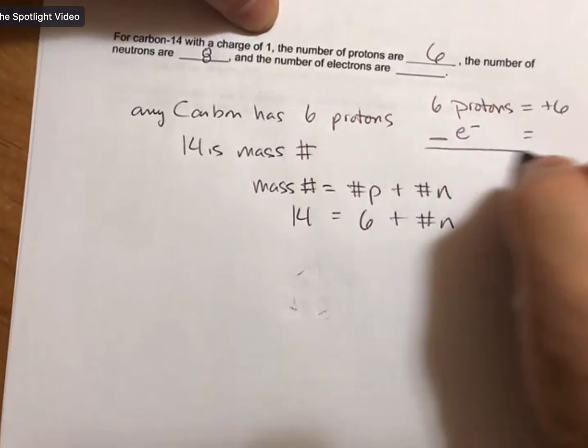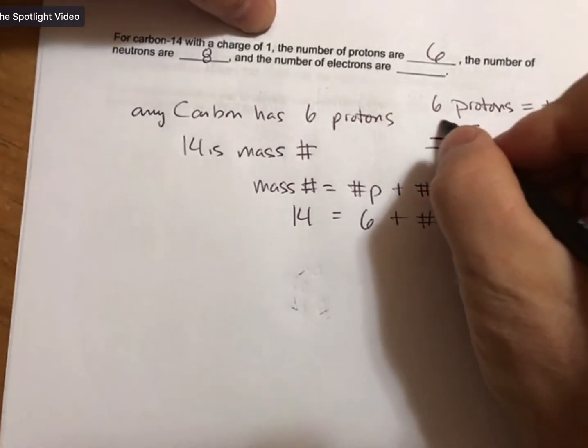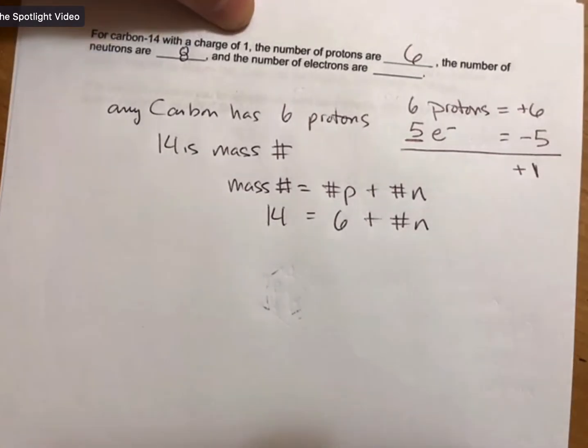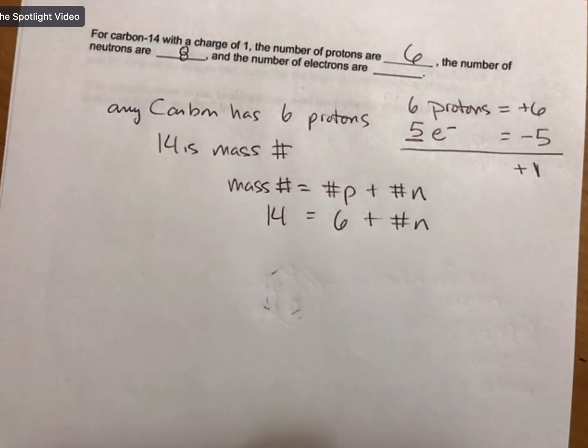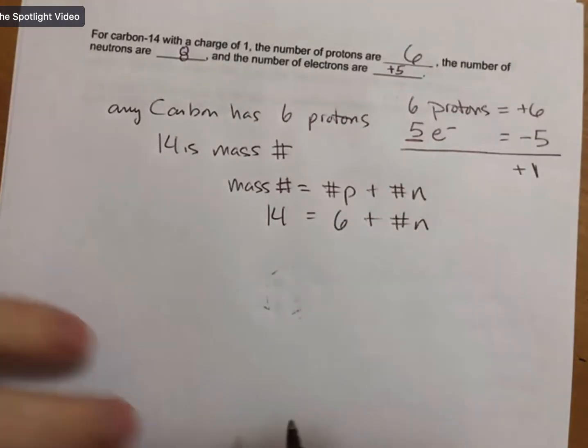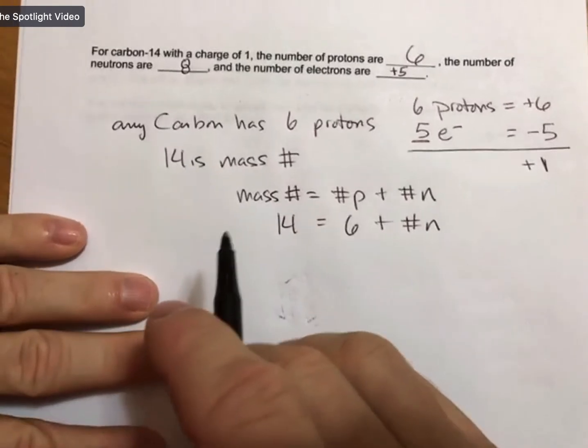I don't know how many electrons I have right now, but I know that it ends up being plus one. So I'm going to need five electrons—each electron is negative, so plus six minus five is plus one. I end up with five electrons; they add up to a charge of minus five.